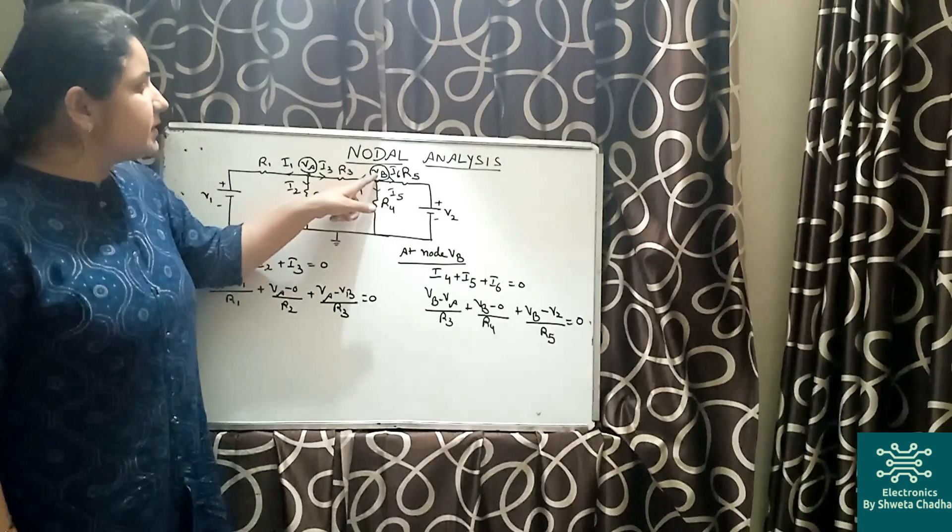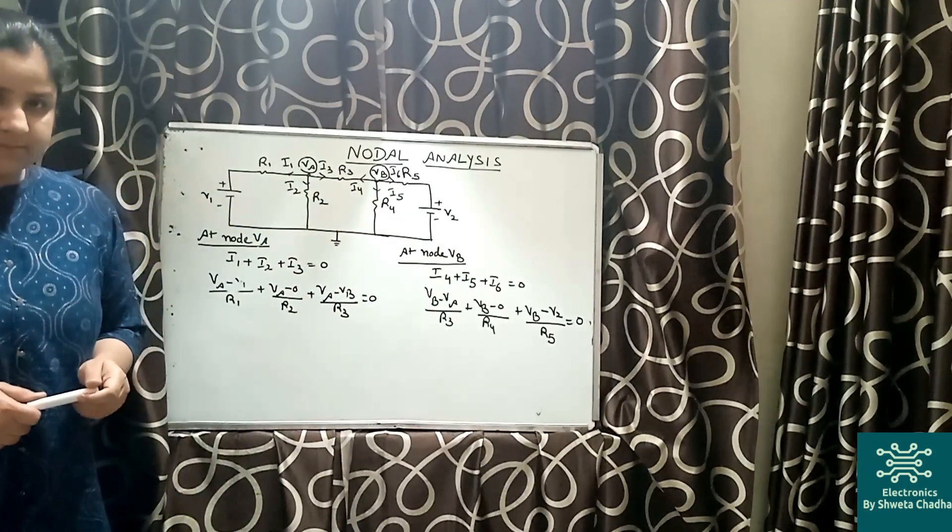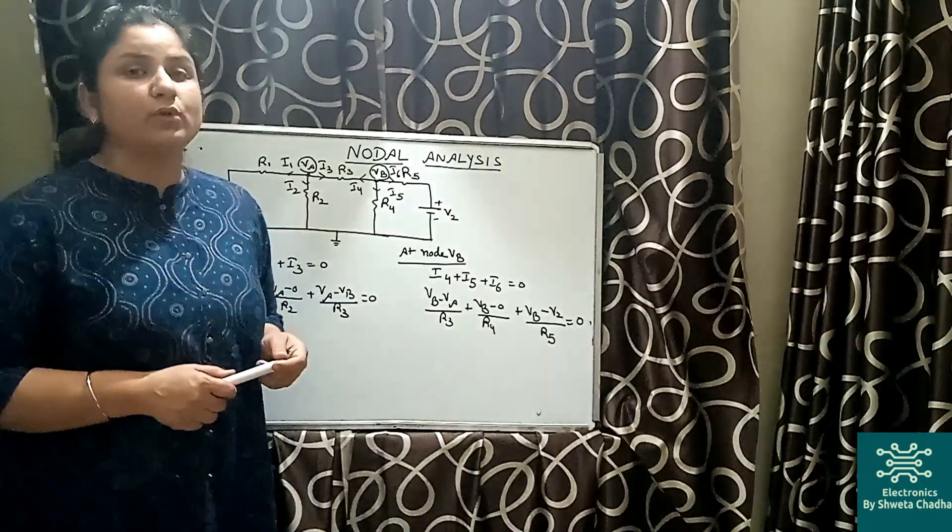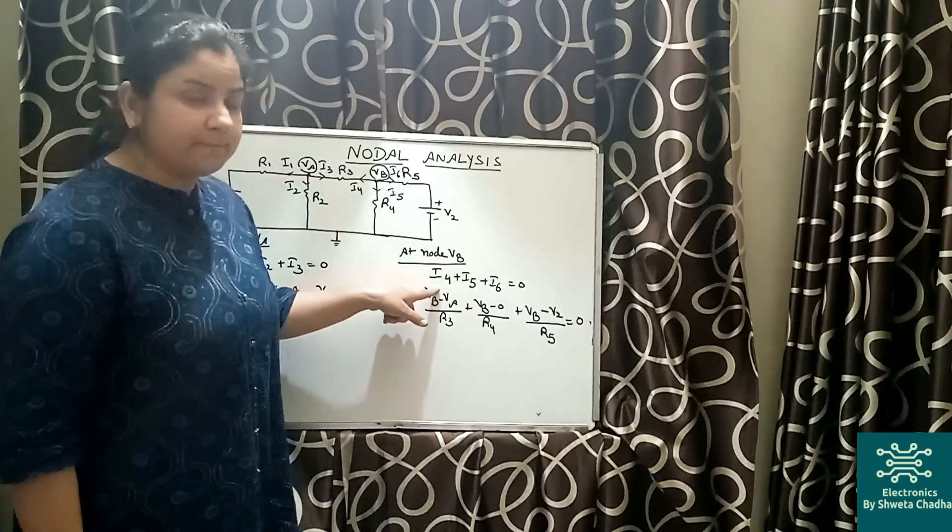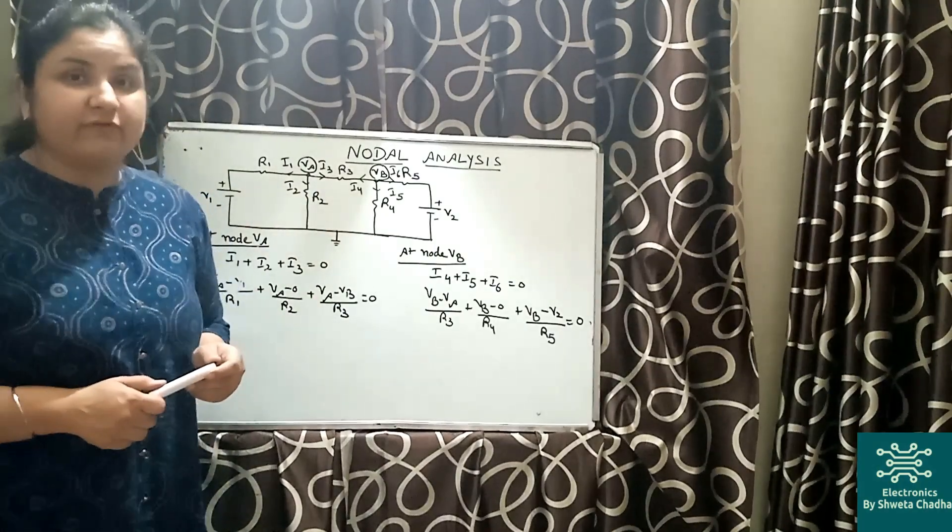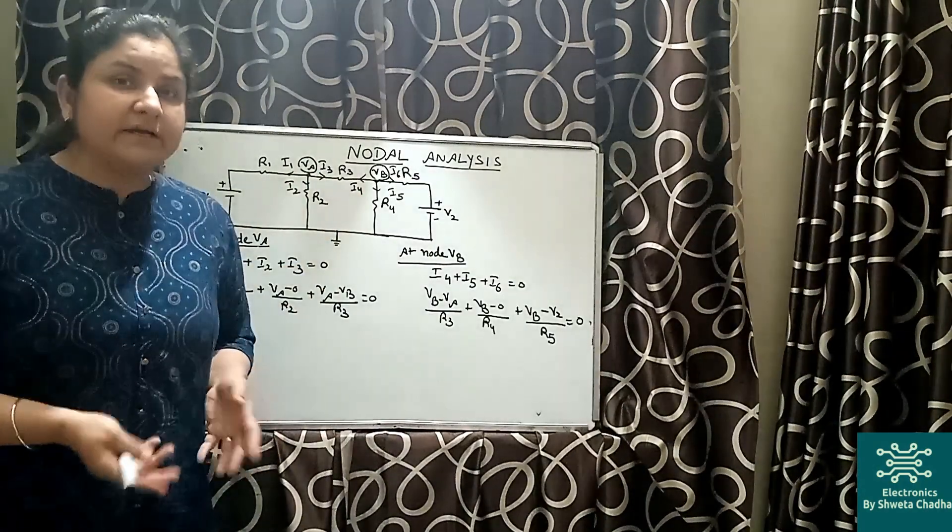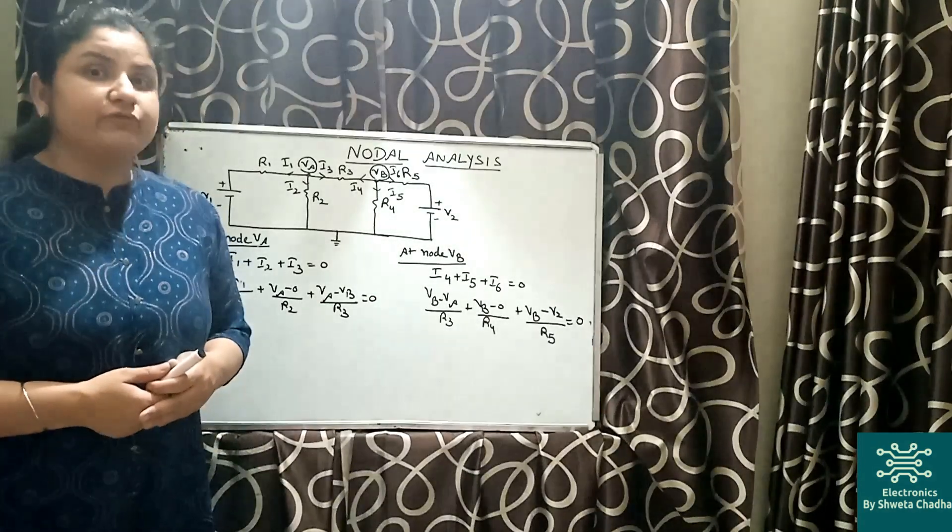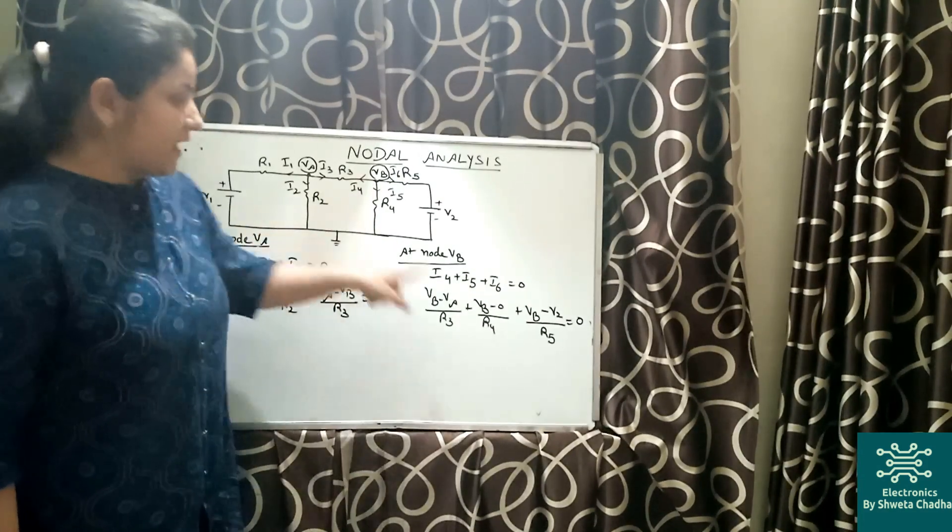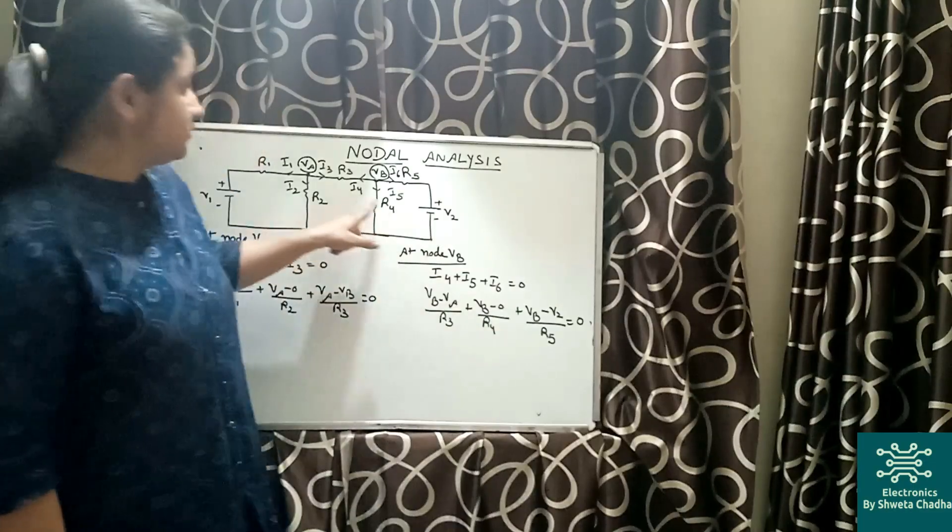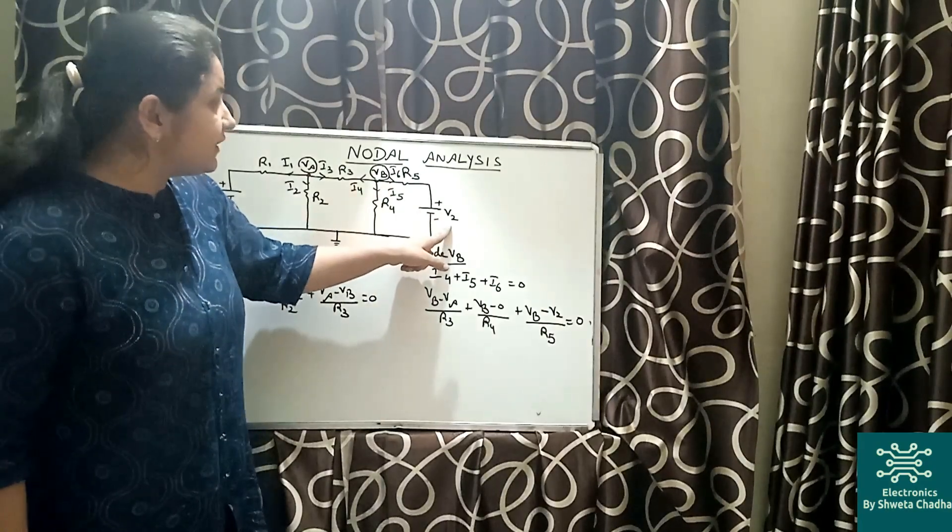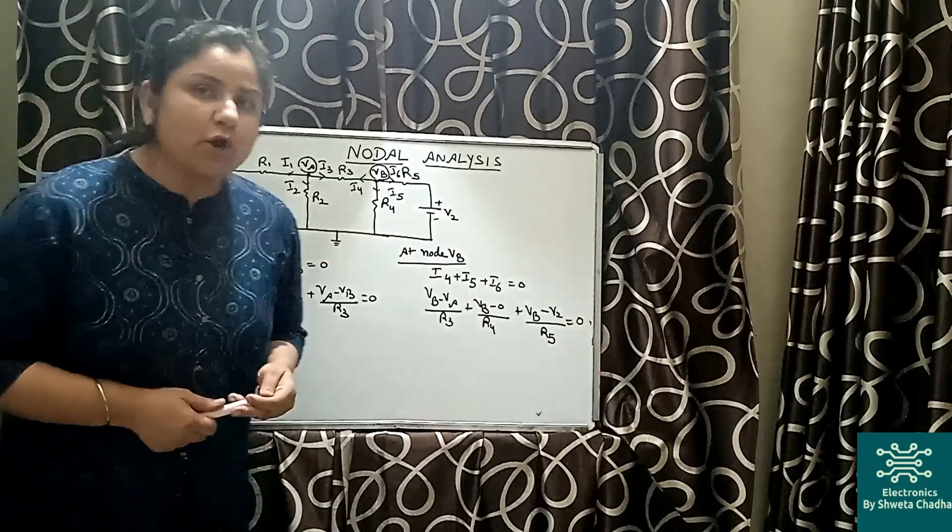So once again, the current is going to flow higher potential to lower potential: i4 outward, i5, similarly i6. So again, i4 plus i5 plus i6 is equal to zero. Now what is the value of i4? i4 will be VB minus VA upon R3. Why VB minus VA now? Because while considering node B, VB is the highest potential. Similarly, VB minus zero upon R4, and third i6 is VB minus V2 upon R5.